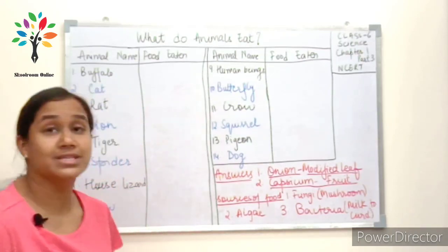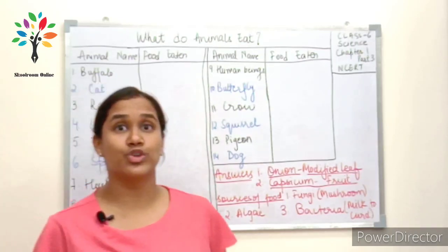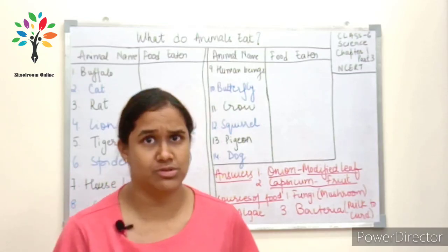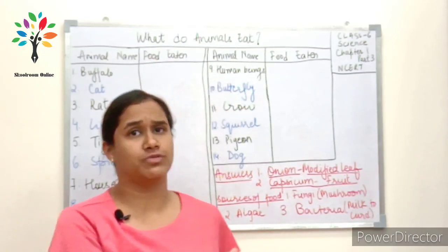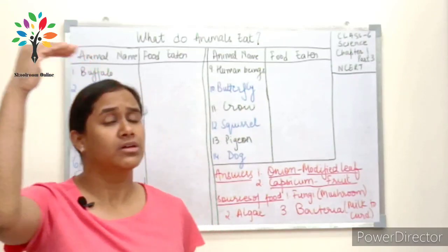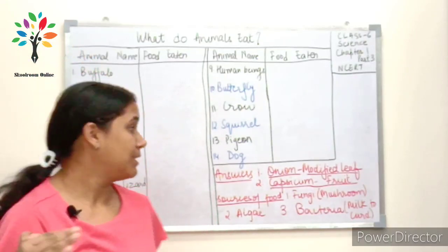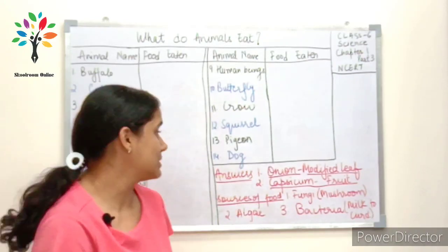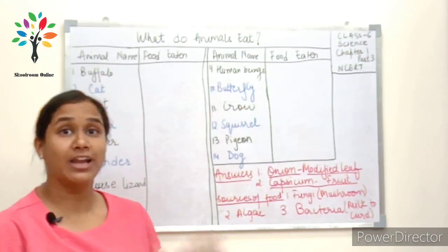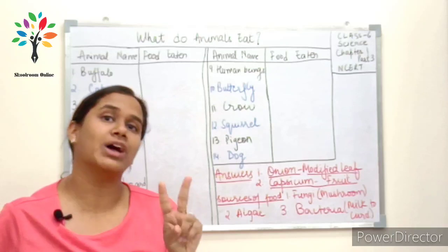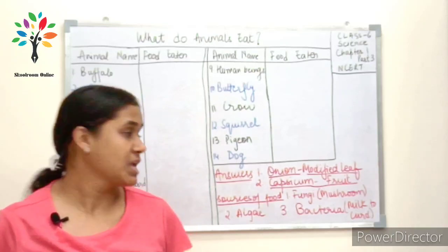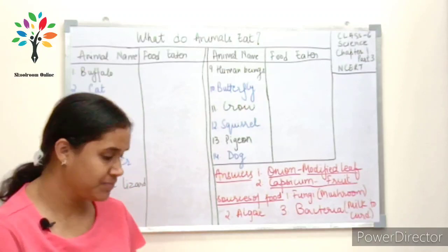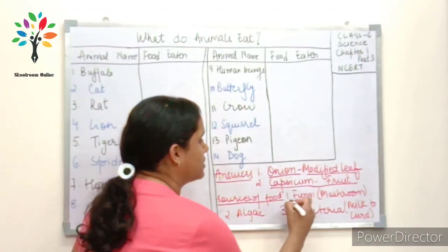The second question I had asked was: what are the other sources of food other than plants and animals? We had discussed that we get most of our food from plants and animals — milk, milk products, and other plant ingredients. You had to give at least two other sources. One of them is fungi, which is very rich in minerals and very good for our health.